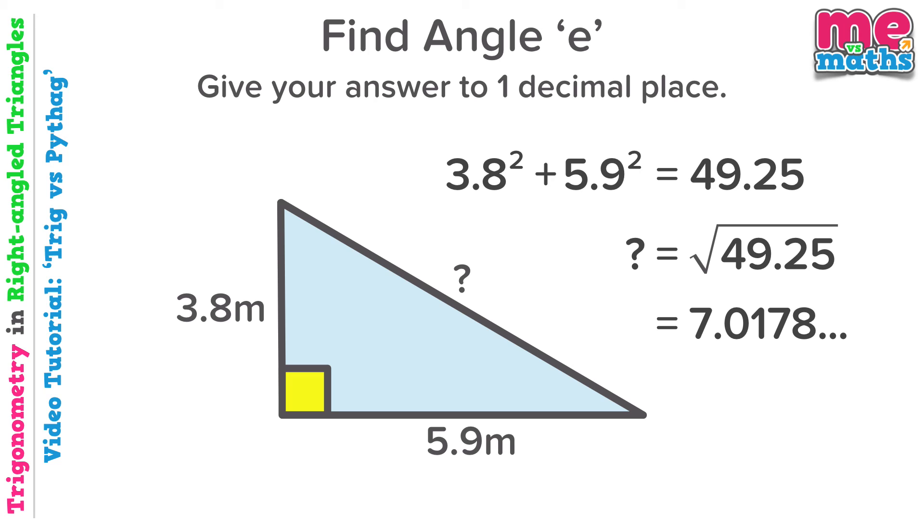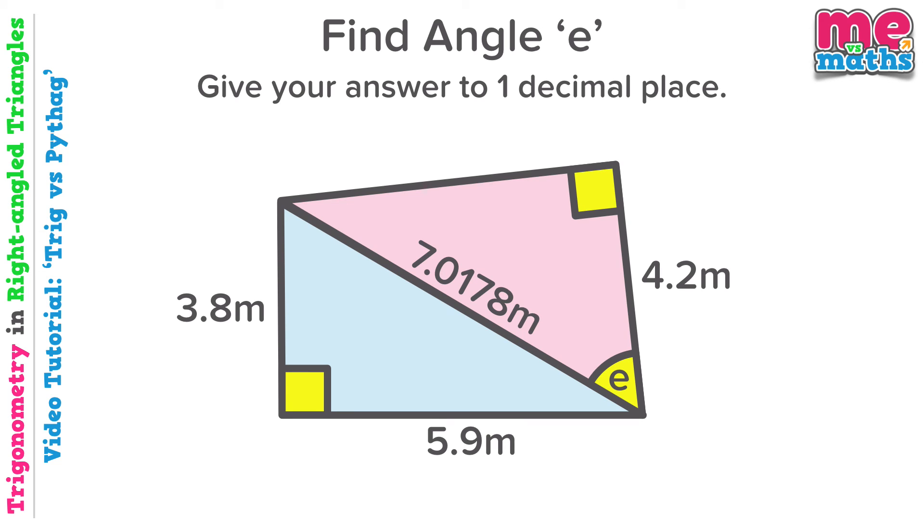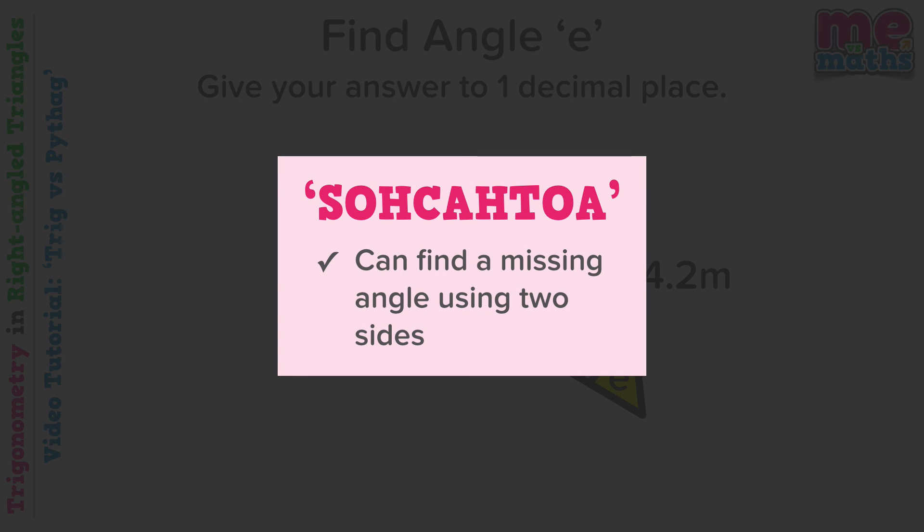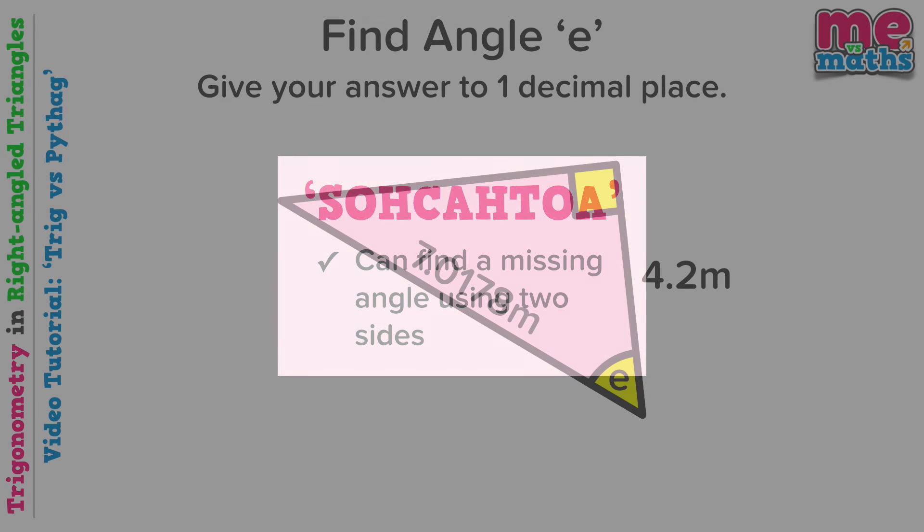I'm going to keep this number fairly accurate, as if I round it off too much here, my final answer will be less accurate than I might like. So let's put this value onto our original picture, and then let's again focus on the pink triangle. We now know two sides, so we can use trigonometry to find the missing angle.